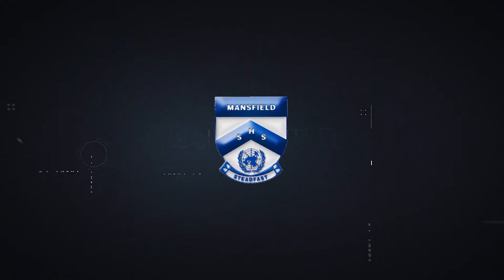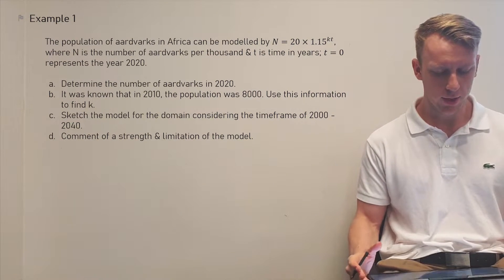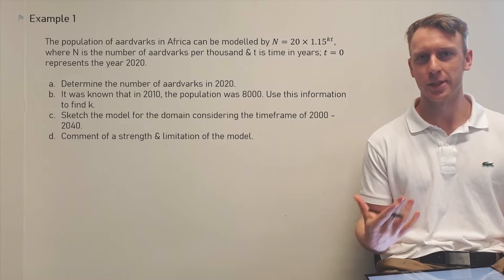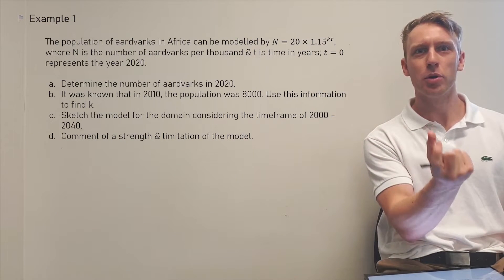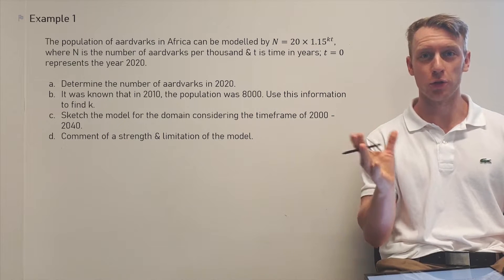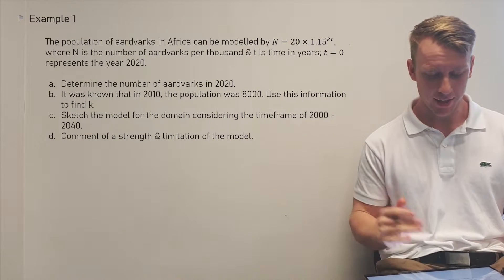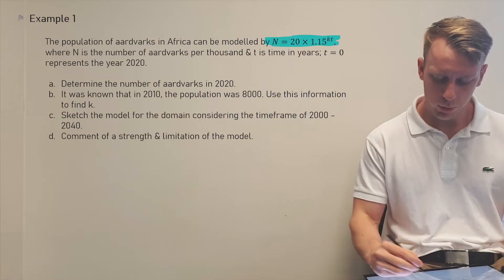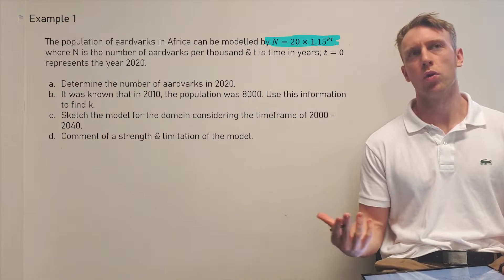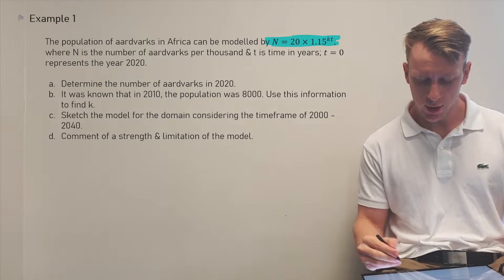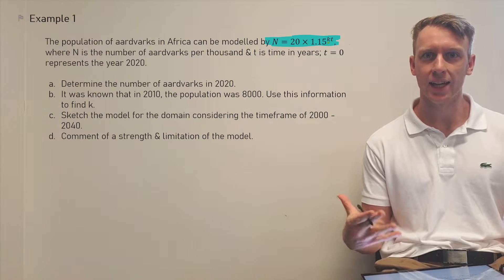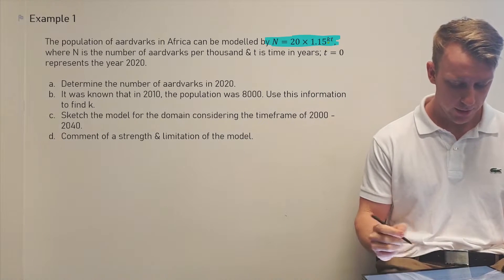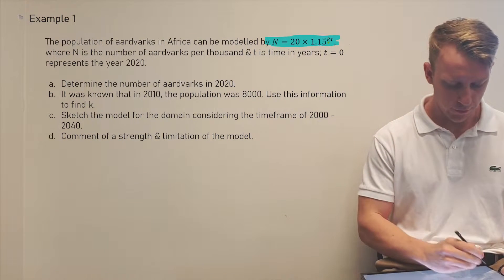Now we'll jump into another example — the population of aardvarks — as an application of exponential functions. This is where the number of things with respect to a variable grows, keeps growing at a faster rate. The population of aardvarks in Africa is modeled with a base number of 1.15, which is quite arbitrary since the value of k in the power will adjust to match the correct growth factor.